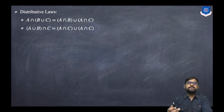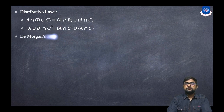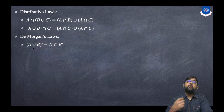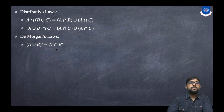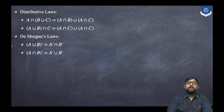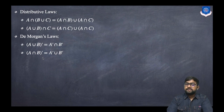De Morgan's law: (A ∪ B)' = A' ∩ B'. In the same manner, changing the order of intersection and union: (A ∩ B)' = A' ∪ B'.